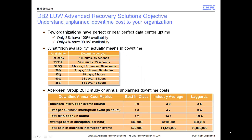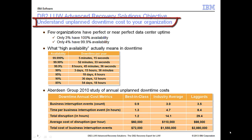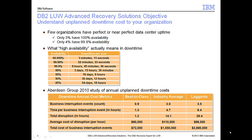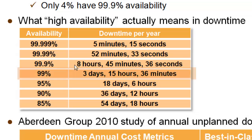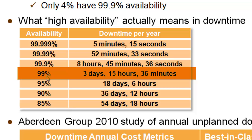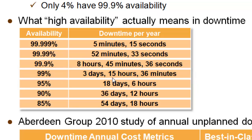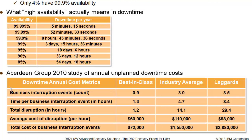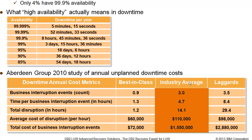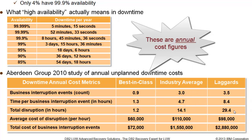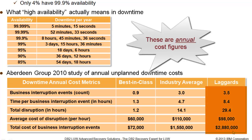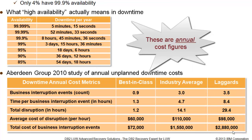Before we get into the technical details, let's understand what unplanned downtime costs your organization. This chart shows that even if you're up 99% of the time, that 1% downtime still ends up being three and a half nail-biting, resume-updating days. The Aberdeen Group study showed that even an average corporation's unplanned downtime will cost over a million and a half dollars, and a laggard could spend almost $3 million.